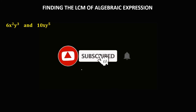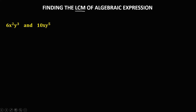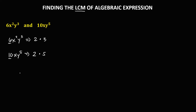Let's solve this problem to find the LCM of algebraic expressions. From the first expression, we need to find the prime factors of the number. For 6, that's 2 times 3, and for the second expression, the prime factors of 10 are 2 times 5.